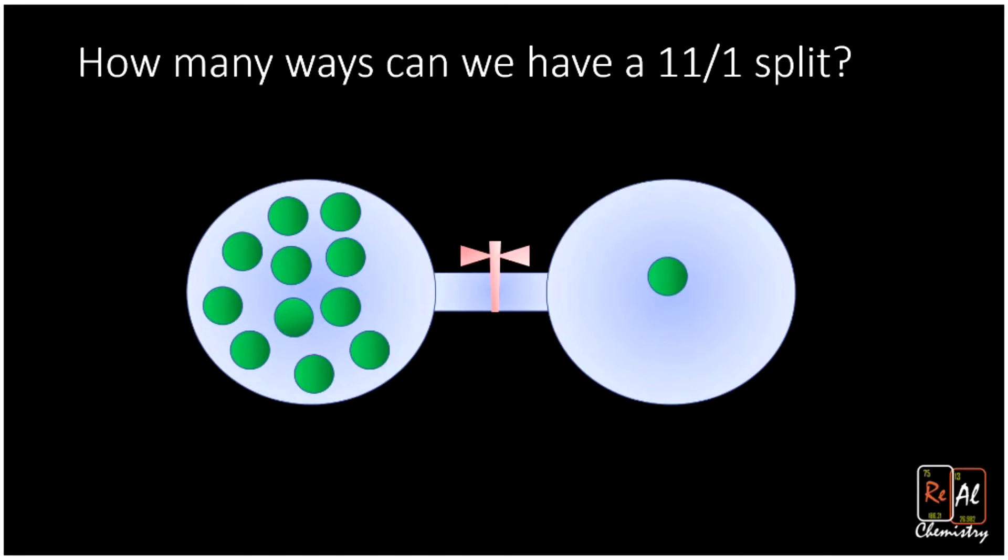So to begin thinking about this process, we're going to ask how many different ways could we have an 11-1 split in our gas chambers? That means 11 over here and one over there. So that 11-1 split could happen a number of different ways. For example, maybe we have molecules 1, 2, 3, 4, 5, 6, 7, 8, 10, 11, and 12 over on the left and molecule 9 over on the right.